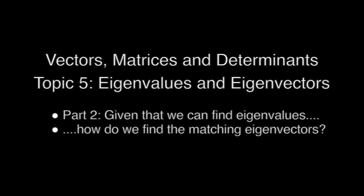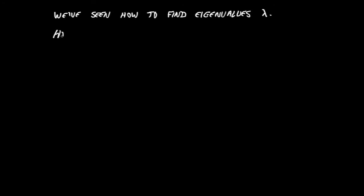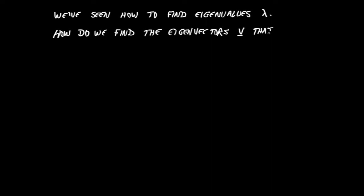This is the second of two videos that looks at eigenvalues and eigenvectors. In the first video, we saw how to find eigenvalues, which we write as lambda. For each lambda, how do we find the eigenvector that goes with it?